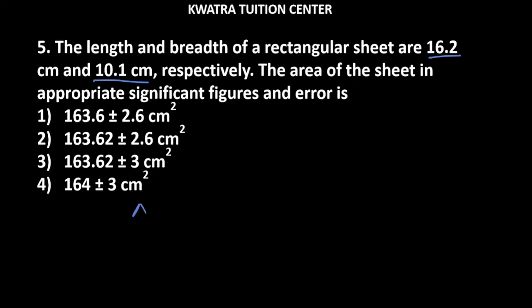To find the error in the area, we need to find the relative error. First, we write del A over A. This is the actual area. And for the length and breadth, we write del L over L and del B over B. Because the area depends on length and breadth, that's why we write del L over L and del B over B. And plus sign comes because we are finding error.